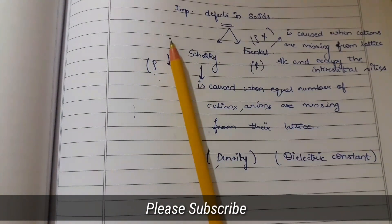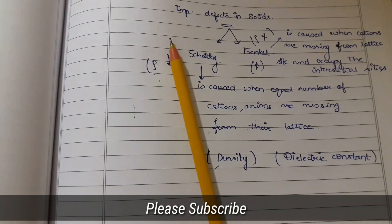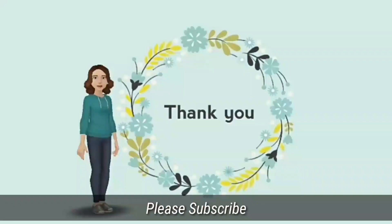That is basically Short Key and Frankel defects. Hope you understood this topic. If you have any questions post in the comments, I will definitely clarify the doubts. Please like, share, and subscribe. Thank you very much. Jai Hind, Jai Bharat.